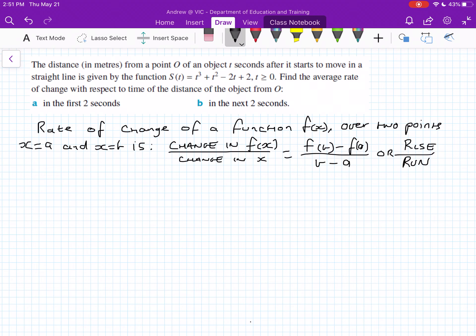So I've got this example here, I'll just go through it and I've already pre-written some notes to save some time. The distance in meters from point O of an object t seconds after it starts to move in a straight line, so it's going in a straight line.